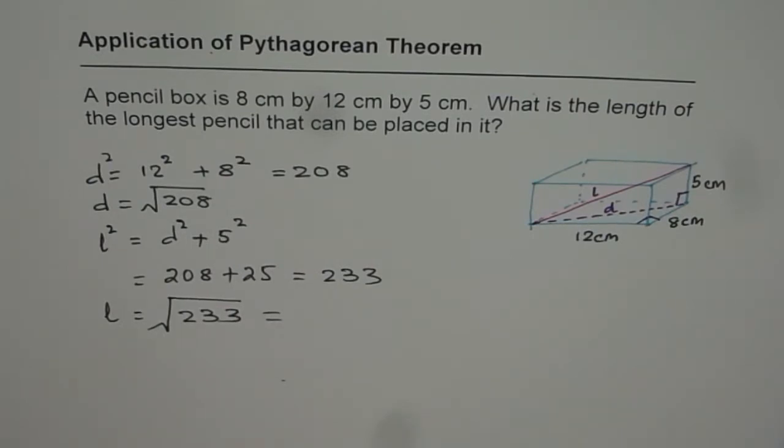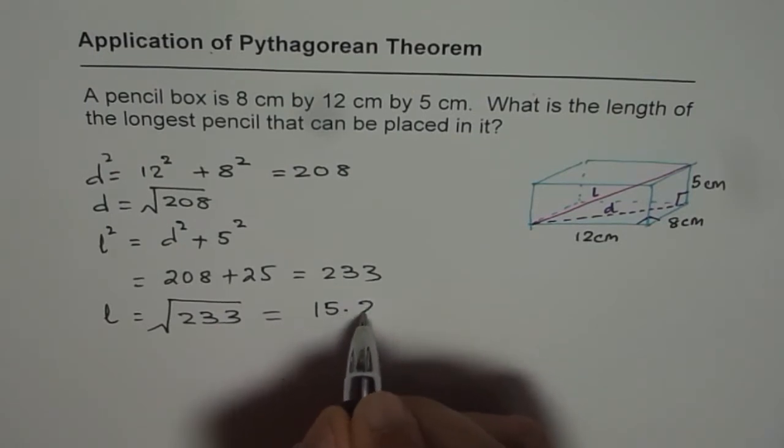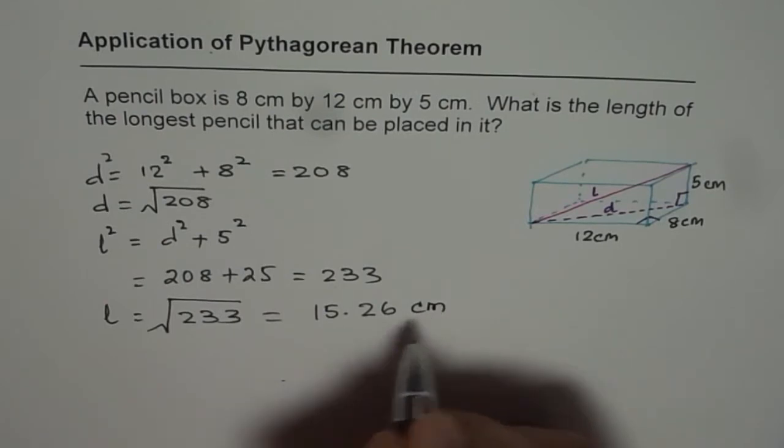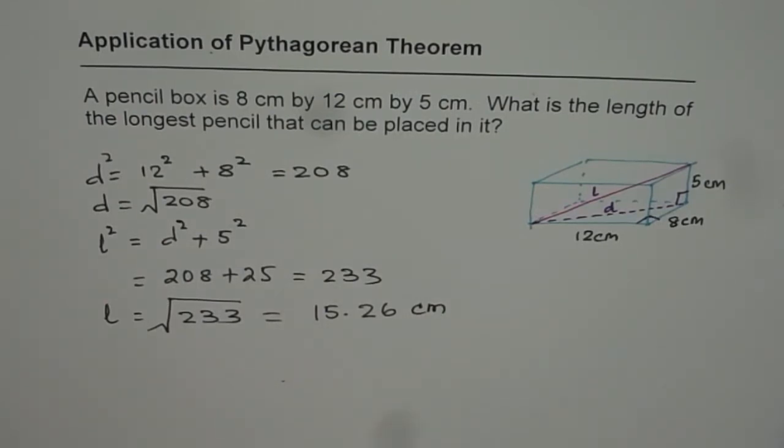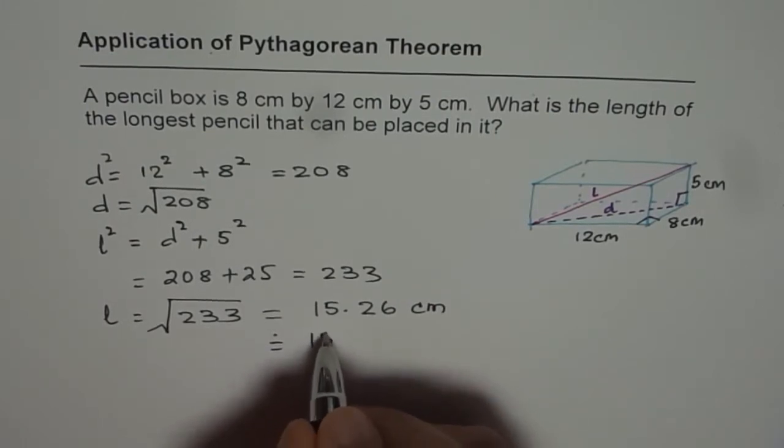Square root of 233 equals 15.26 cm. That is the approximate length of the pencil which can fit into it. We can round it to 15 centimeters.